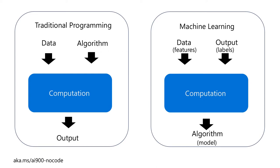So we have data which becomes features, and our output which becomes our input called labels. The machine learning process takes that data and those labels, learns all the patterns and computation, and then the computer tells us how it's going to build its own algorithm — and that is what we call a model.